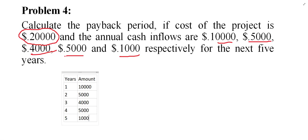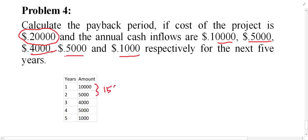Now start adding the cumulative balance. If you add year one and year two balances, it becomes 15,000. If you add year three with that, 15 plus 4 becomes 19,000. If you add year four as well, it becomes 24,000.